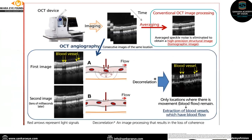Here you can see an OCT device. In an OCT image, multiple B-scans are taken. In the image below, you can see a first image as well as a second image taken 10 milliseconds later. Basically, there will be a decorrelation signal processed and we will be getting only the location where there is movement of blood flow.